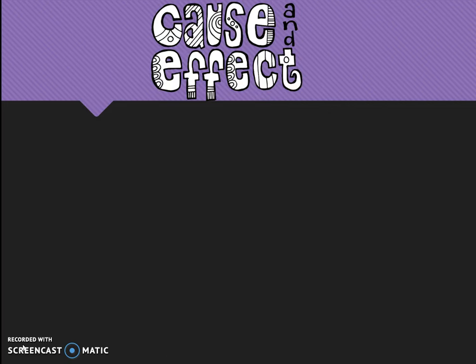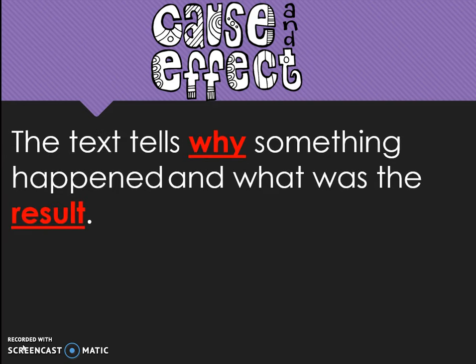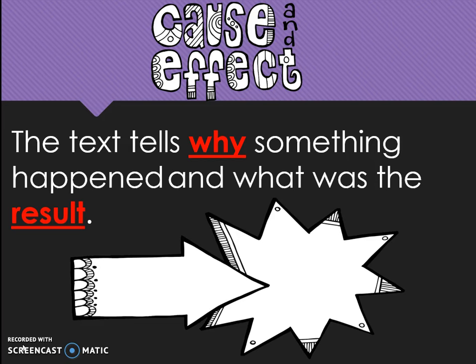The third text structure is cause and effect. This is when the text tells why something happened and what was the result. Our visual reminder is this arrow that leads to the star. The arrow tells why something happened, and the star tells what was the result.